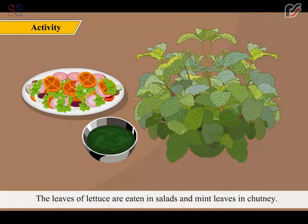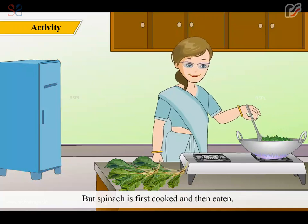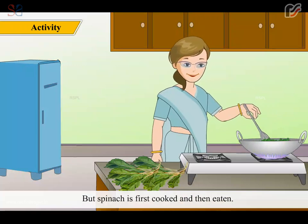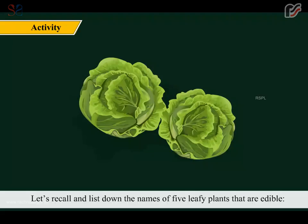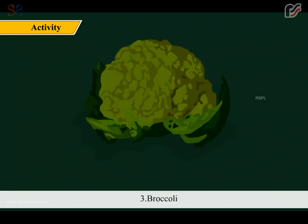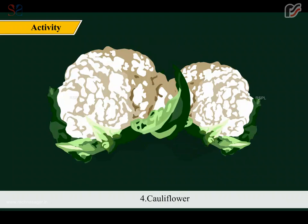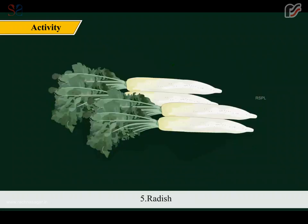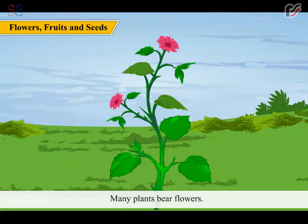The leaves of lettuce are eaten in salads and mint leaves in chutney, but spinach is first cooked and then eaten. Let's recall and list down the names of 5 leafy plants that are edible: 1. Cabbage, 2. Spinach, 3. Broccoli, 4. Cauliflower, 5. Radish.